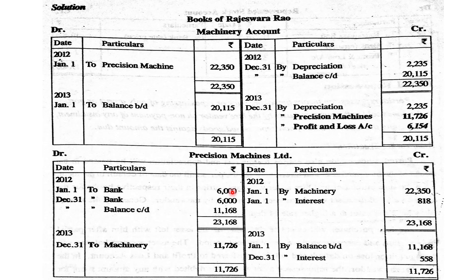The next entry is interest due. The remaining amount due: cash price ₹22,350 minus down payment ₹6,000 equals ₹16,350. Interest on ₹16,350 at 5% = ₹818.